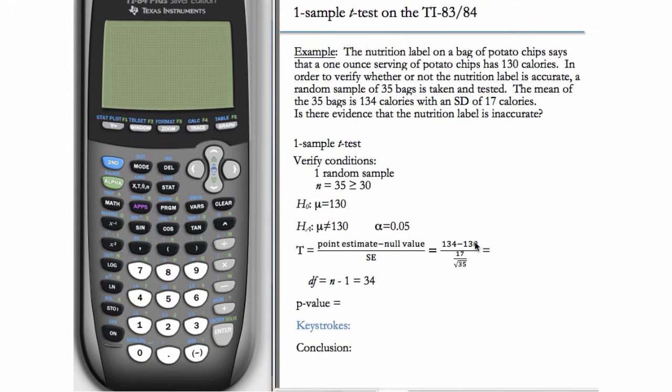This is the null value at 130. And the SE, we can look on the formula sheet and see that the SE for a mean is s over root n, the sample standard deviation of 17 over the root of n or sample size of 35. And our degrees of freedom is n minus 1 or 34.